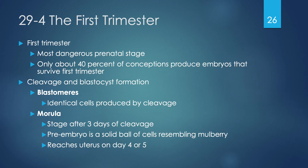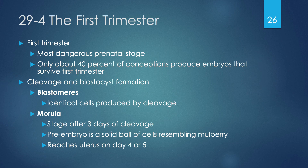The first trimester is the most dangerous prenatal stage because so much is happening and so much could go wrong. Only about 40% of all conceptions will produce an embryo that survives the first nine weeks. Things can go wrong such as failure to implant, failure to form a placenta, or genetic malformations and mutations. Ultimately, 100% of pregnancies that occur do not result in delivery, primarily because many first-trimester fertilizations do not result in survival.